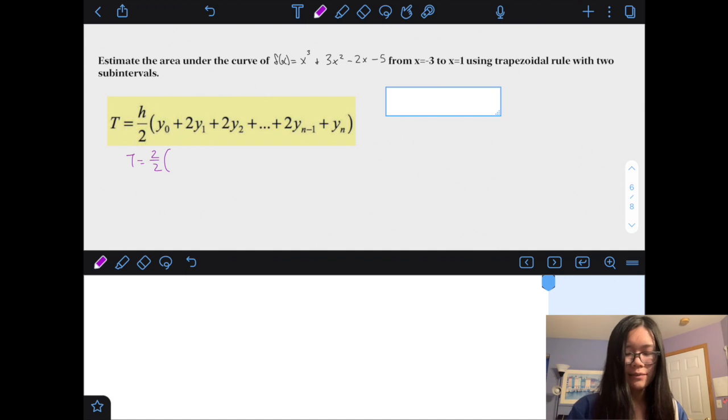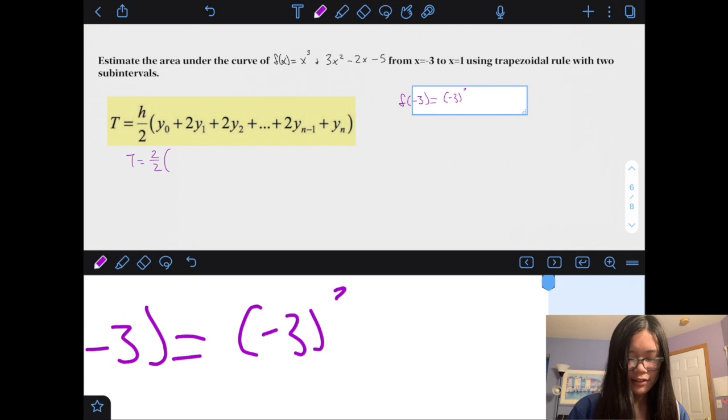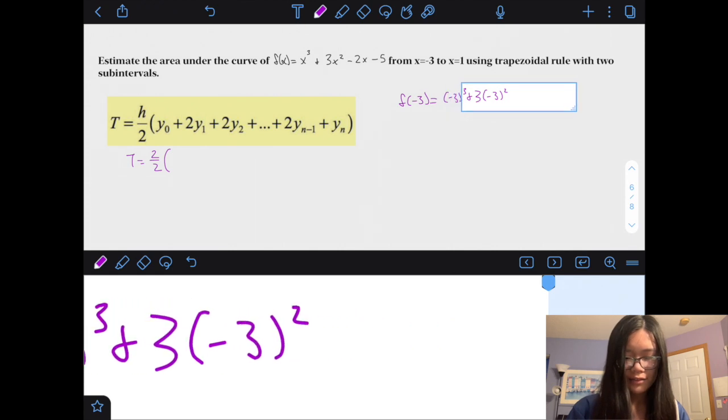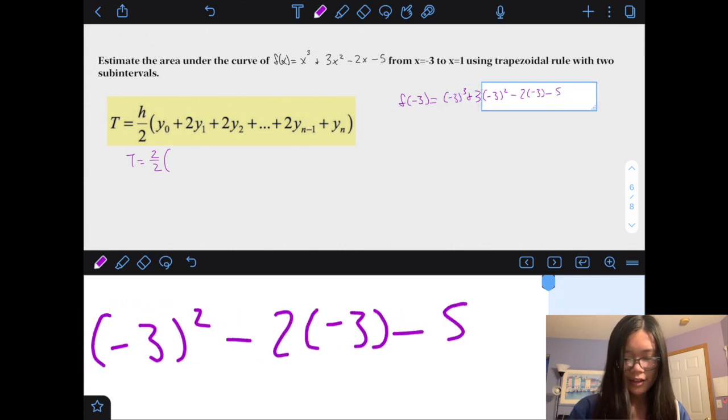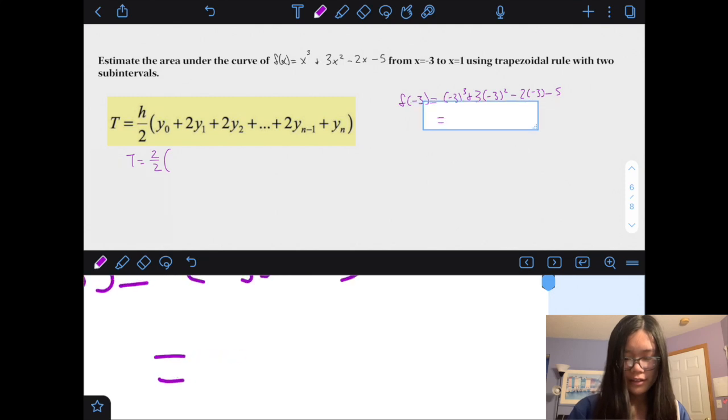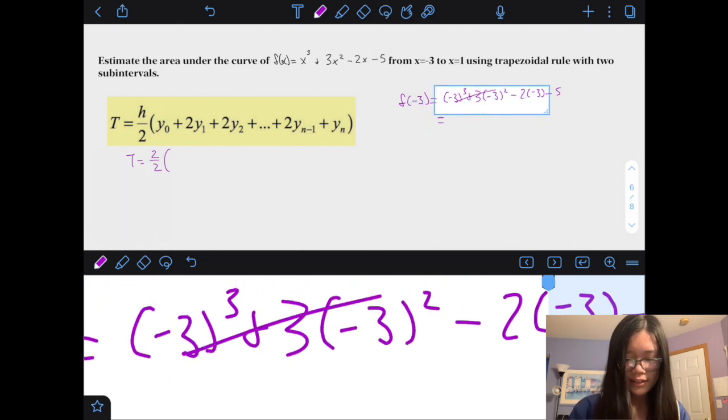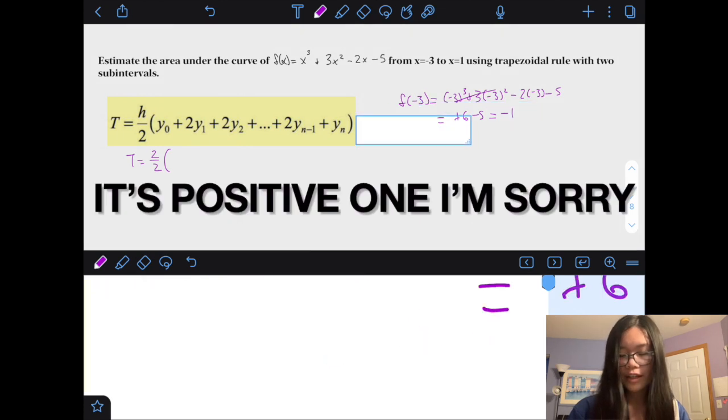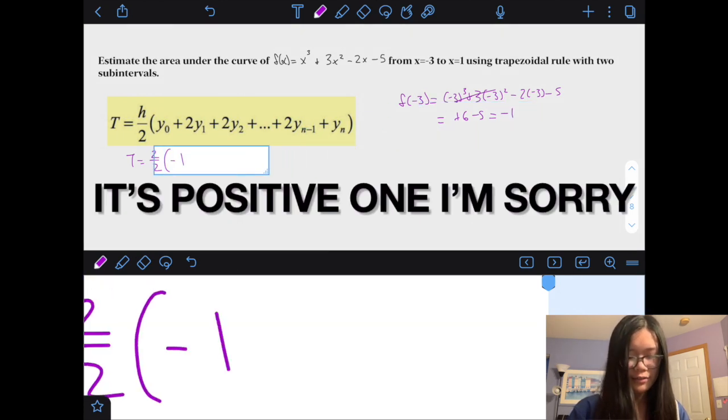And we don't have a graph this time, so we're actually going to have to put in our values ourselves. Luckily, we only have to find 3, because you have start at negative 3, you move 2, you get to negative 1, do another 2, 1. So, f of negative 3 equals negative 3 cubed plus 3, 3 times negative 3 squared minus 2 and negative 3 minus 5 equals, these two will cancel out, equals negative, which equals positive 6 minus 5 equals just negative 1, alright? So, we got our first value of negative 1.